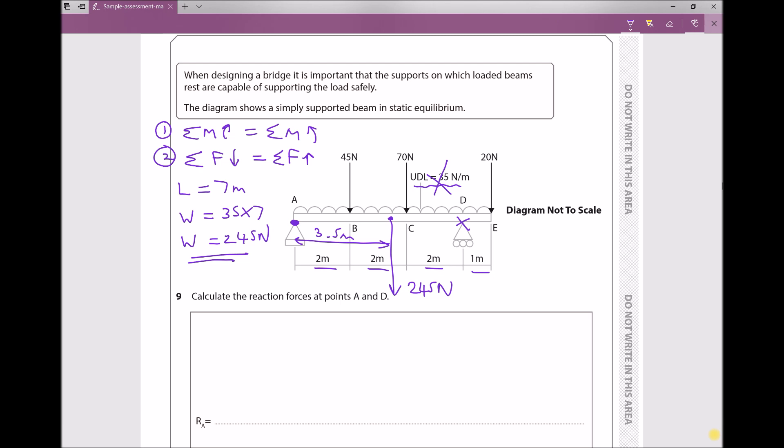So let's look at our first condition for static equilibrium which states that the sum of the moments in the clockwise direction equals the sum of the moments in the anticlockwise direction. I'm just going to rewrite that so ΣM↻ = ΣM↺ and I'm going to add about A in brackets to remind myself that I'm taking moments about that left-hand support.